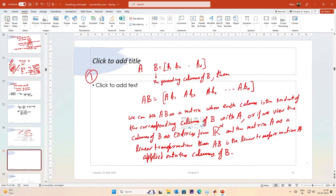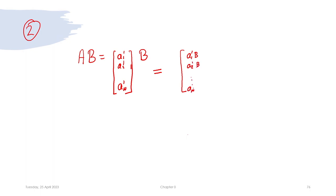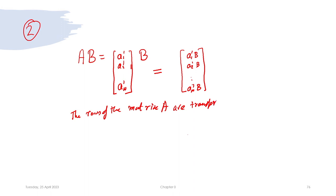The second way of looking at matrix multiplication: AB expressed using the rows of A — A1', A2', ..., An' — gives rows [A1'*B, A2'*B, ...]. Basically, in this view, the rows of matrix A are transformed using the linear transformation B.